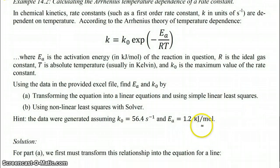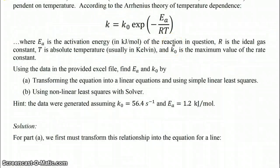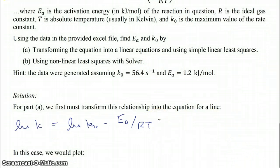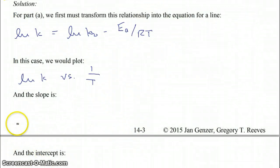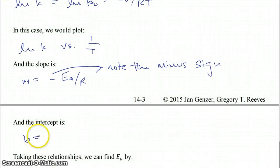For part (a), we transform the Arrhenius relationship into the equation for a line. Since the expression is exponential, we take the natural log of both sides: ln(k) = ln(k₀) − E_a / RT. To make this the equation of a line, we plot ln(k) versus 1/T. The slope is −E_a / R — note the minus sign — and the intercept b equals ln(k₀).